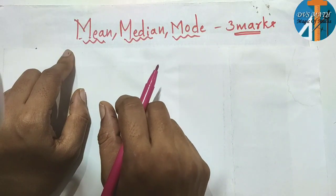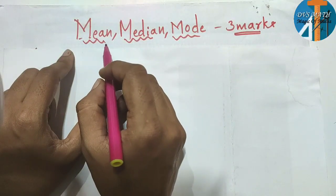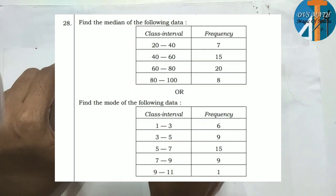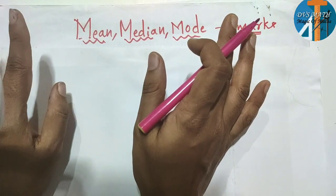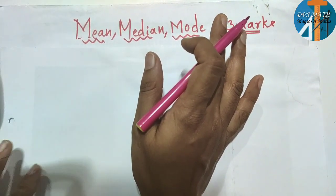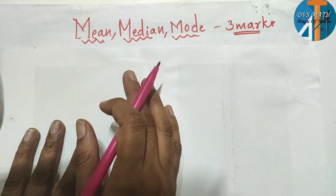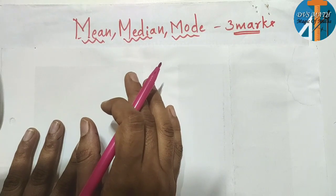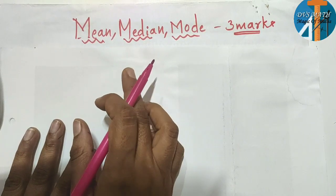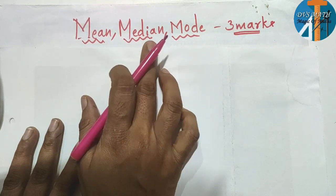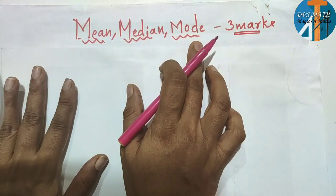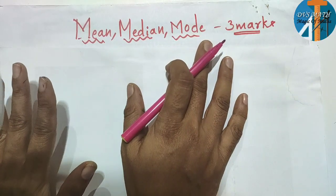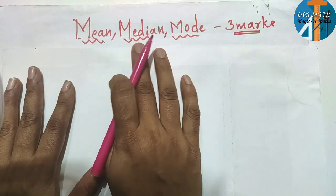So, for the last exam, final exam, you need to remember mean, median, and mode. You have to remember all three of these marks — mean, median, mode.